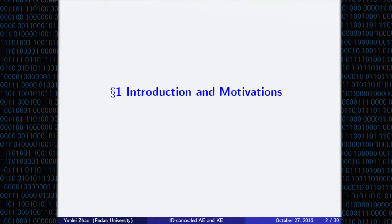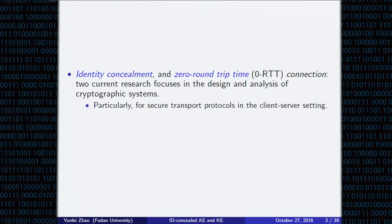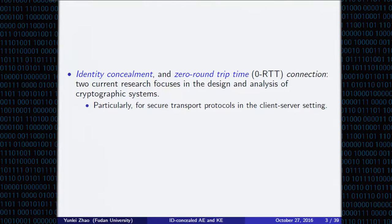I'll first present the introduction and the motivation. Identity concealment and zero-round trip time (zero RTT) connection are two current research focuses in the design and analysis of cryptographic systems, in particular for secure transport protocols in a client-server setting, including TLS 1.3 and Google's QUIC.